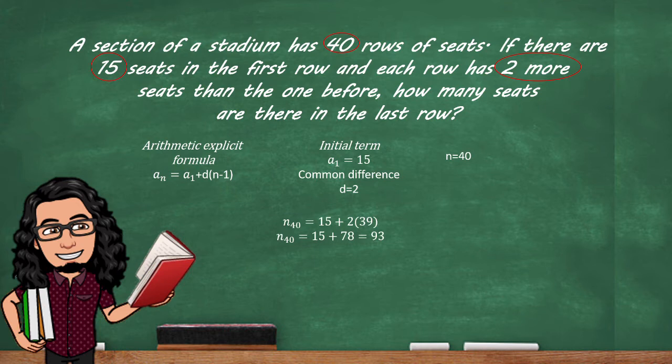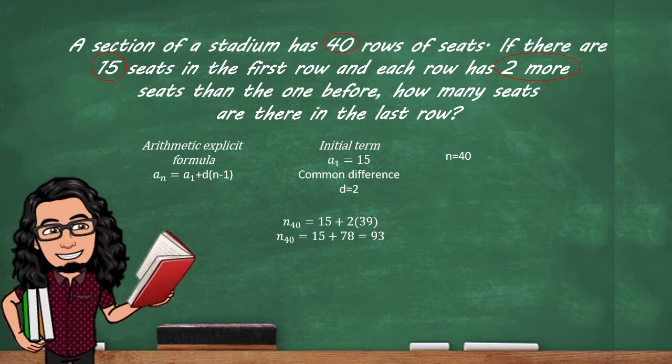Now following our formula, n sub 40 is gonna be equal to the number of seats in the last row. It's the initial term 15 plus the common difference multiplied by the number of rows that we are looking for. Since we already have the first one we are only looking for the next 39 and that's gonna be equal to 15 plus 78, equal to 93. Since we are giving context we need to give our solution in context. So the final answer is there are 93 seats in the last row.